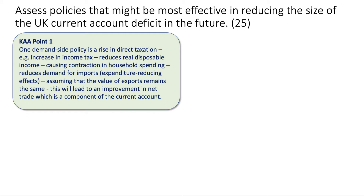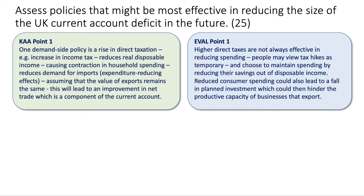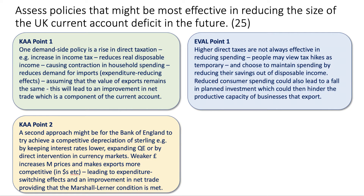Now evaluate the point: are higher taxes effective in improving the current account? Higher taxes are not always effective in cutting spending — people might see the tax rises as temporary and choose to maintain their spending by lowering their savings. The household savings ratio might fall. Also, if consumption is falling, that can reduce profits for businesses and might lead to a fall in planned capital investment. With UK investment at only 17% of GDP, less investment could hinder the productive capacity of businesses and exports going forward. So cutting spending may reduce import demand, but you also risk cutting investment.